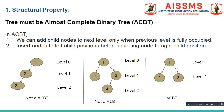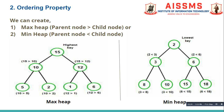Now let us see what is the ordering property. As per the ordering property, we can either create a max heap or a min heap. In case of max heap, the value of the parent node is always greater than the value of the child node, and in case of min heap, the value of the parent node is always lesser than the value of the child node.